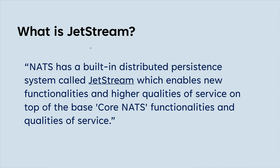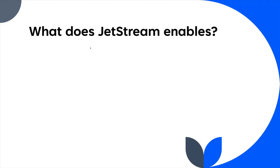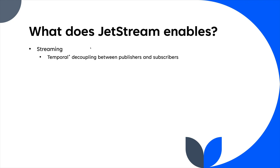JetStream gives NATS the ability to persist messages, and it can do it in a distributed way. It's built-in so you don't have to add something else on top of NATS. What JetStream really enables first is streaming, which refers to temporal decoupling — meaning that before, with Core NATS, if a publisher is sending messages a subscriber essentially has to be online at the same time to get those messages.